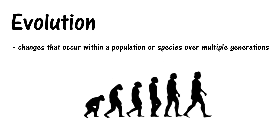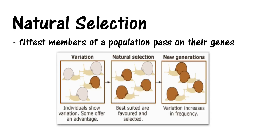A common image that is used for talking about evolution is this image of an ape gradually becoming more upright, and then at the end it's a human. But this image is incorrect. An ape didn't just decide that its child would walk upright. Instead, what happens is this process of natural selection.